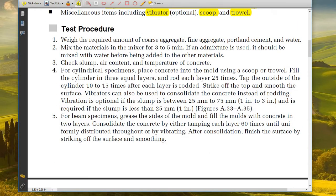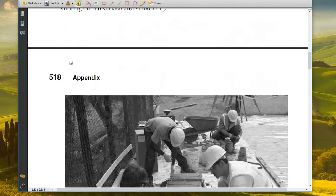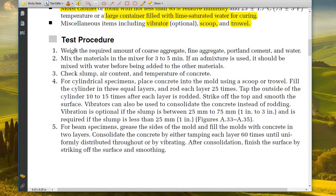The test procedure: First, weigh the required amount of coarse aggregate, fine aggregate, Portland cement, and water. Mix the materials in the mixer for three to five minutes. If an admixture is used, it should be mixed with water before being added to the other materials.